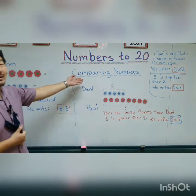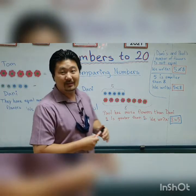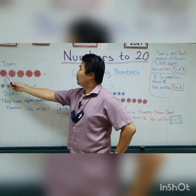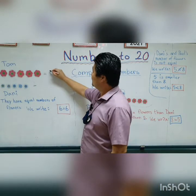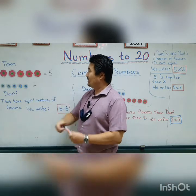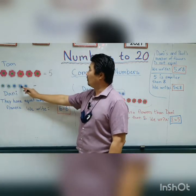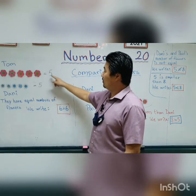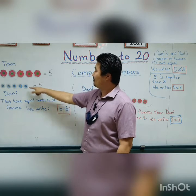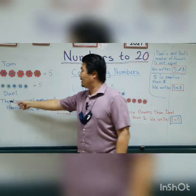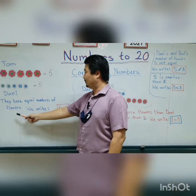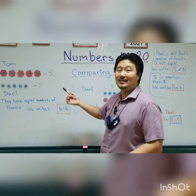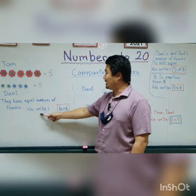In this video we're going to talk about comparing numbers. If you look here on my right, we have two people. We have Tom and he has one, two, three, four, five red flowers. And then we have Danny and she has one, two, three, four, five blue flowers. So they both have five flowers. They have equal numbers of flowers.